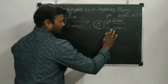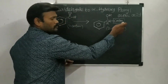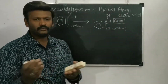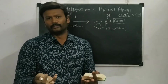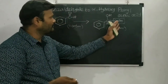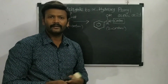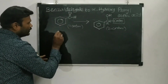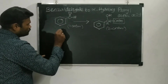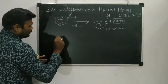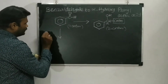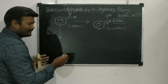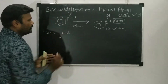In those two carbon atoms, one should be a carboxylic acid. So the clue is: by adding a cyanide group, we can achieve this conversion. If we add a cyanide group to benzaldehyde, it will get converted accordingly. So here I am taking benzaldehyde.